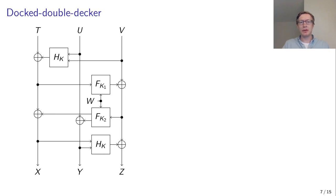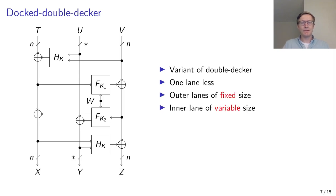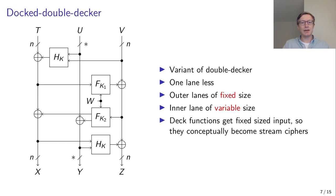We also have the docked double-decker, a variant where two lanes are merged together and some input is moved around, so it has one lane fewer. Again, the outer lanes are fixed size and the inner lane is variable size, so the bulk of the data is only processed three times. What is also interesting is that the DECK functions only receive a fixed-size input, so they actually become stream ciphers conceptually, which are much more commonly used.